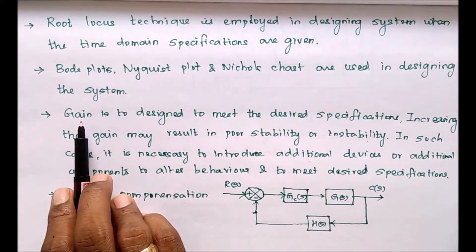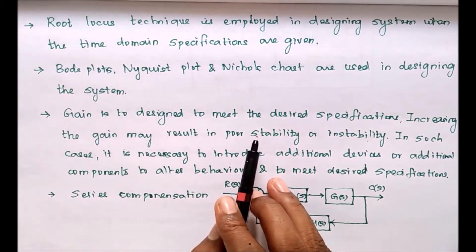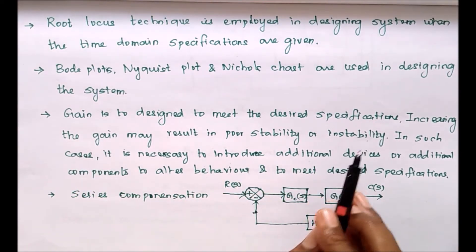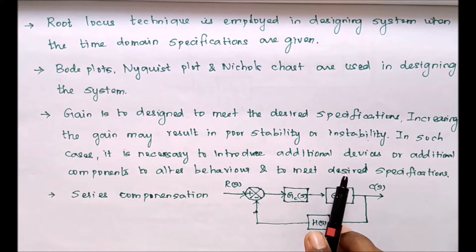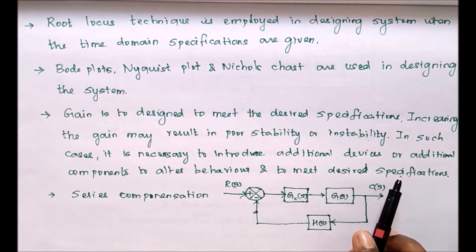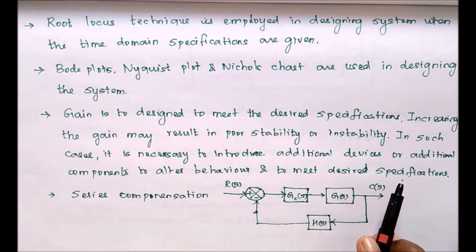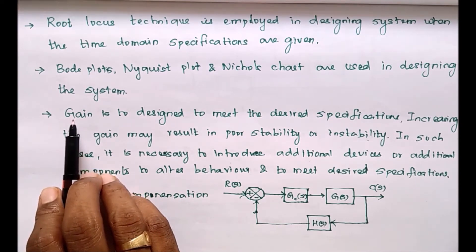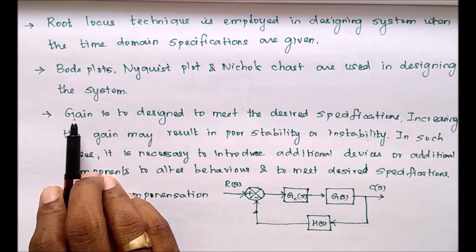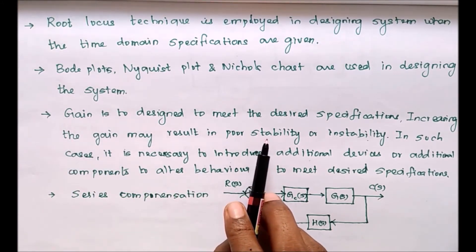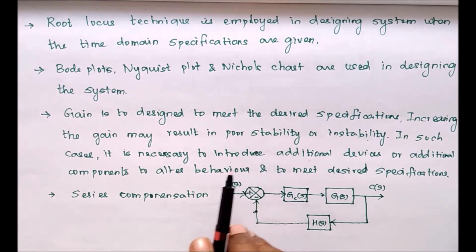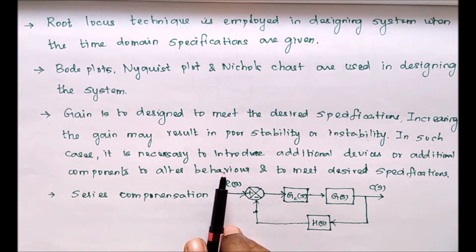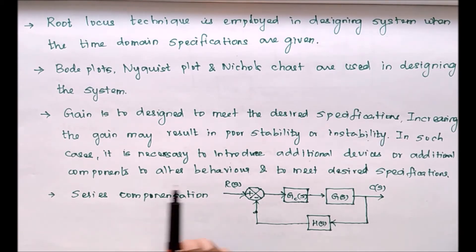When we design a gain, if the gain increases, it may lead to poor stability or instability. In such cases, we introduce additional devices or components to alter the behavior or to meet the desired specifications. For example, if you want to design a system for a 40-degree phase margin, we adjust the gain. But if increasing the gain leads to instability, we add another device — that device or component is called a compensator.